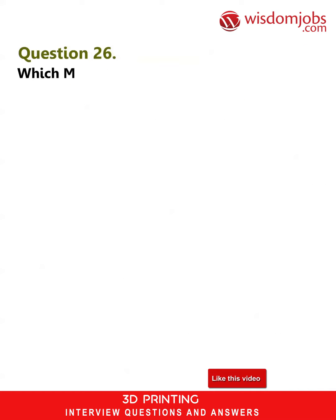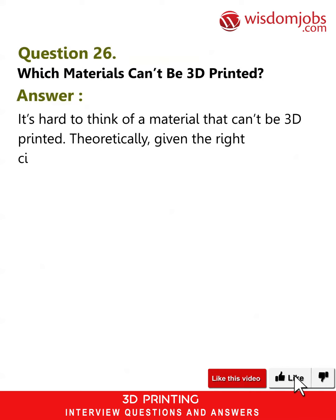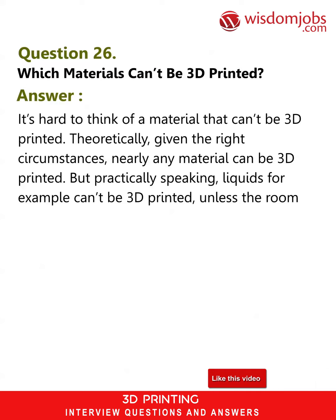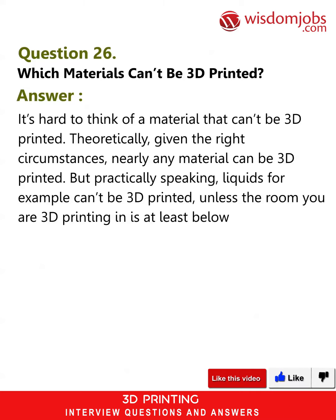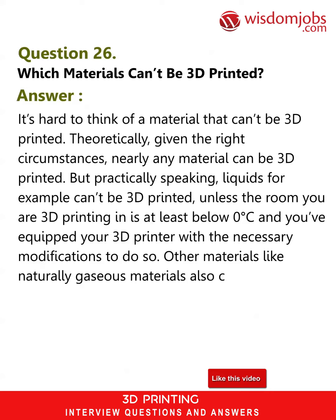Question 26: Which materials can't be 3D printed? Answer: It's hard to think of a material that can't be 3D printed. Theoretically, given the right circumstances, nearly any material can be 3D printed. But practically speaking, liquids for example can't be 3D printed unless the room you are 3D printing in is at least below 0 degrees Celsius and you've equipped your 3D printer with the necessary modifications to do so. Other materials like naturally gaseous materials also can't be 3D printed under normal conditions.